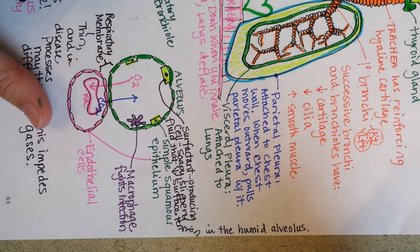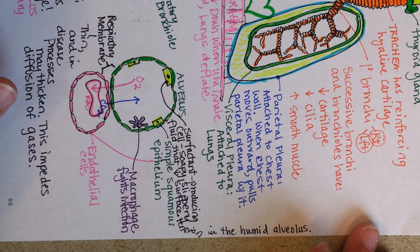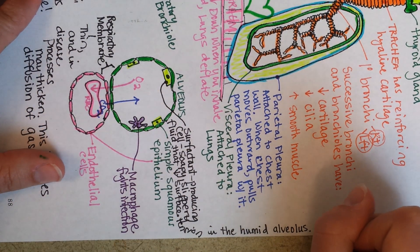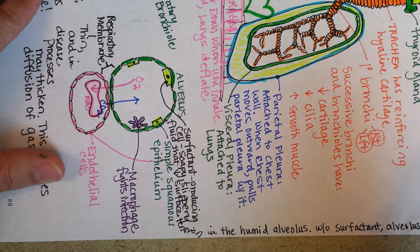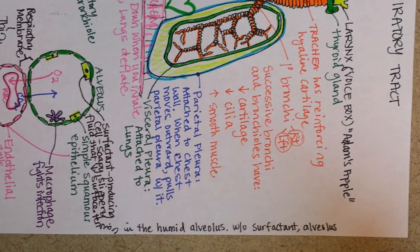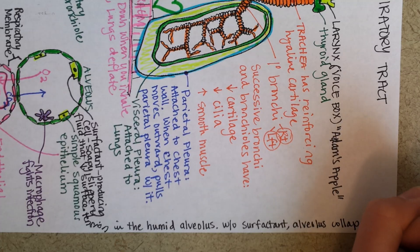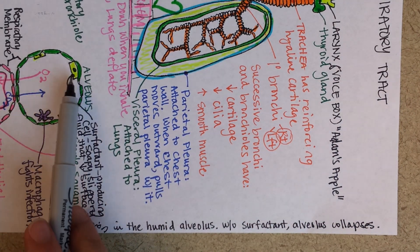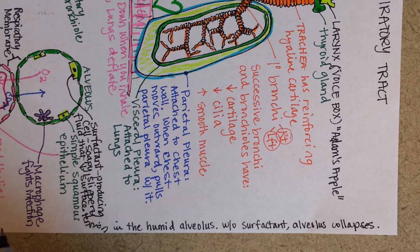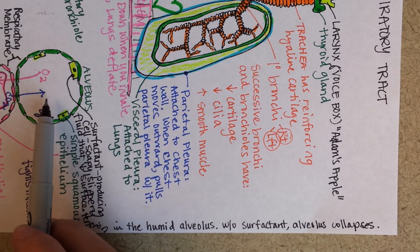If it weren't for surfactant, these cells are so fragile that the entire alveolus would collapse. And that is exactly what can happen with premature babies. Premature babies, especially boys, don't make as much surfactant. So when they're born, in between each breath, some of their alveoli actually collapse down.